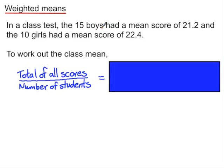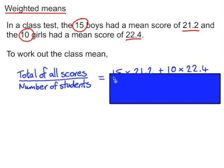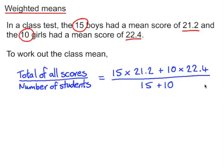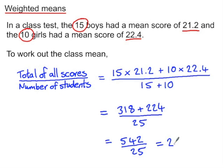In a class test, 15 boys had a mean score of 21.2 and 10 girls had a mean score of 22.4. To work out the mean for the entire class we can't simply average these two scores because there are more boys than girls. We need a weighted mean: 15 times 21.2 plus 10 times 22.4 gives the total score, and dividing by the total number of students gives a class mean of 21.68.